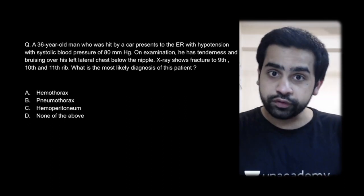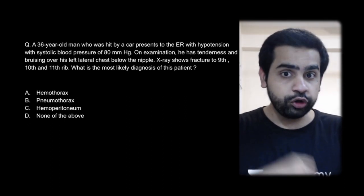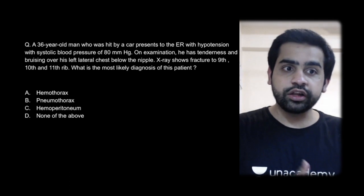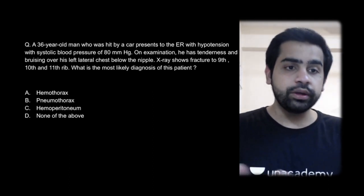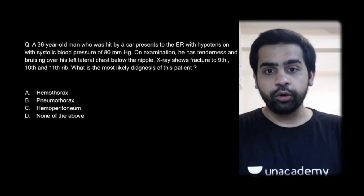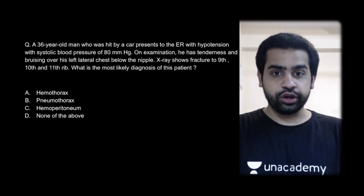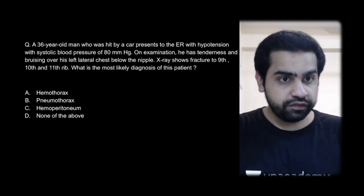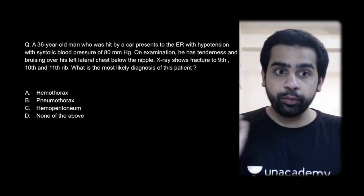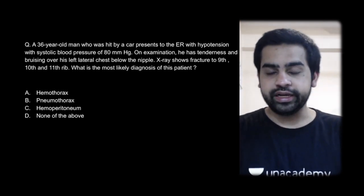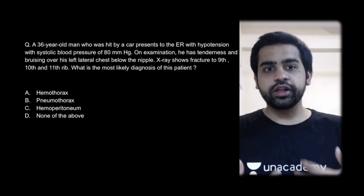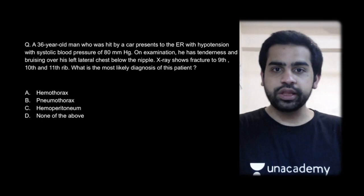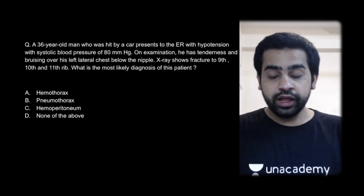What is the most likely diagnosis? Is it a hemothorax, pneumothorax, pneumoperitoneum, or none of the above? The correct answer is hemoperitoneum. If you thought it was hemothorax because there was chest trauma and rib fractures, you are wrong.